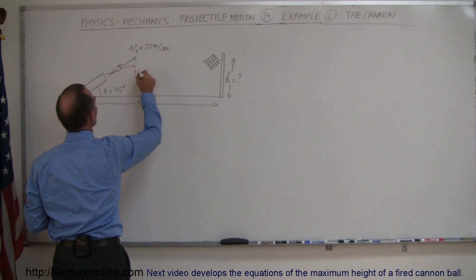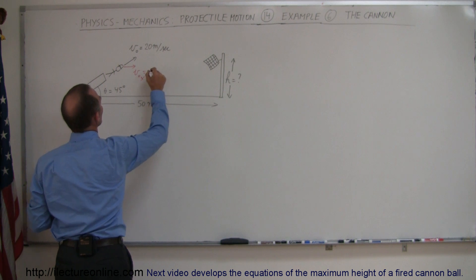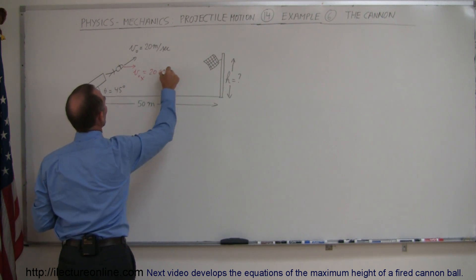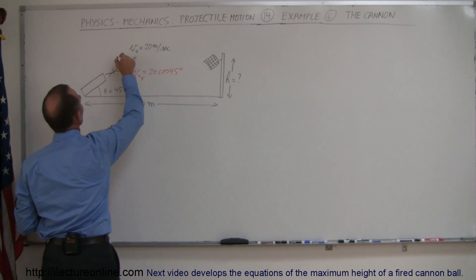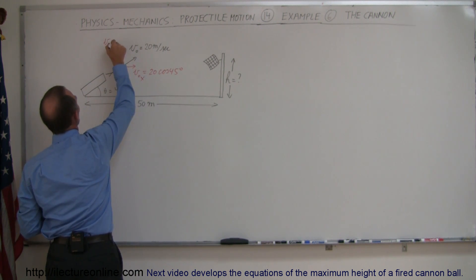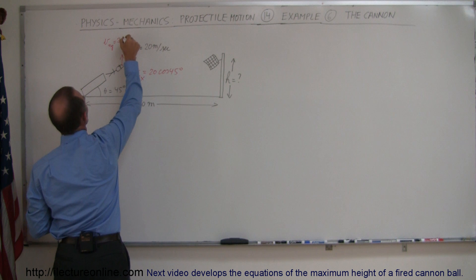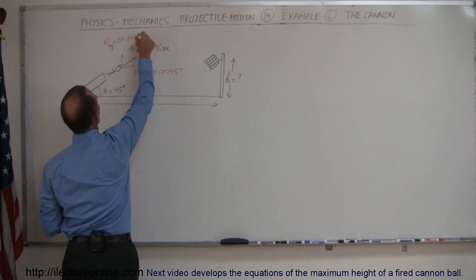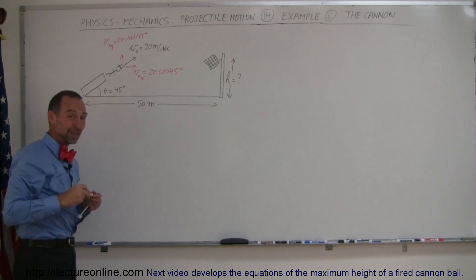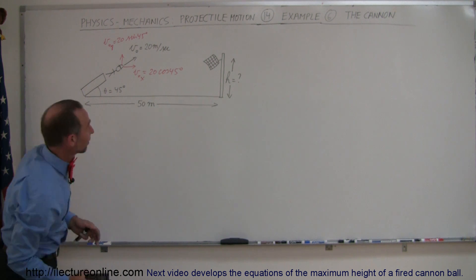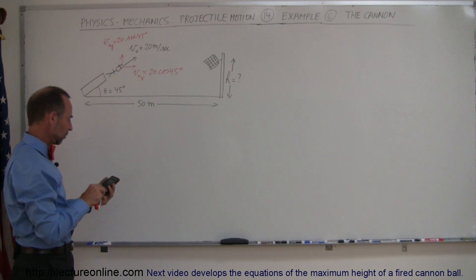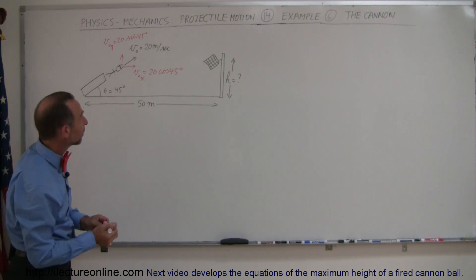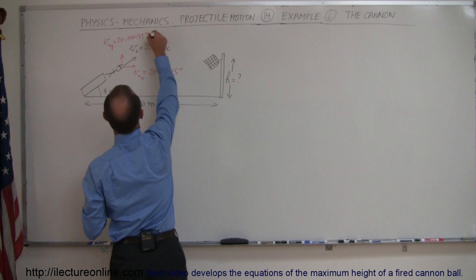So here's your v initial in the x direction, which is equal to 20 times the cosine of 45 degrees. And here we have the v initial in the y direction, which is 20 times the sine of 45 degrees. Because the angle is 45 degrees, the speed will be the same for both the x and the y direction. So 45, take the sine, times 20 equals, so it would be 14.14 meters per second in either case.